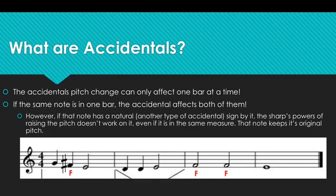However, if the same note is in one bar, the accidental affects both of them. What if this F in the third measure was sharp? Would the same F next to it also be sharp? Yes! They would both be sharp, because they are the same note in the same measure.